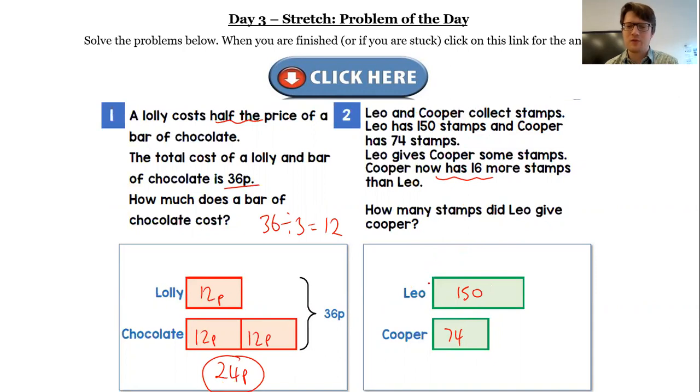So there are several steps here. The first thing we need to work out is how many stamps do Leo and Cooper have in total? So we've got 74 add 150, which gives me 224 stamps in total.